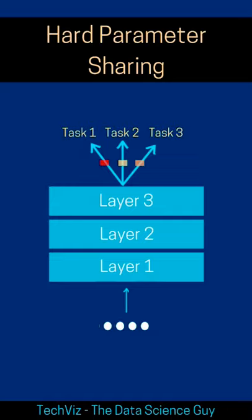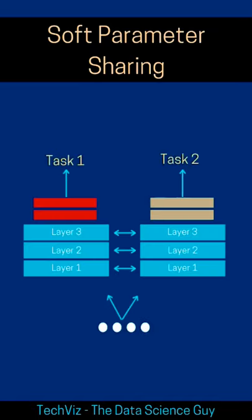Under soft parameter sharing, the idea is again the same. Depending on the number of tasks, we spawn two groups of layers which can be seen as blue ones and colored ones.